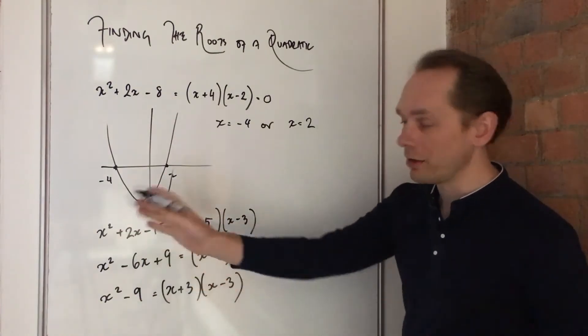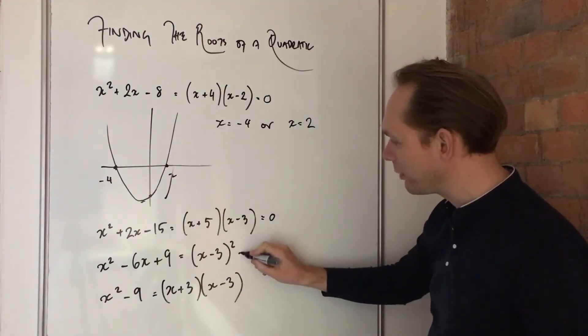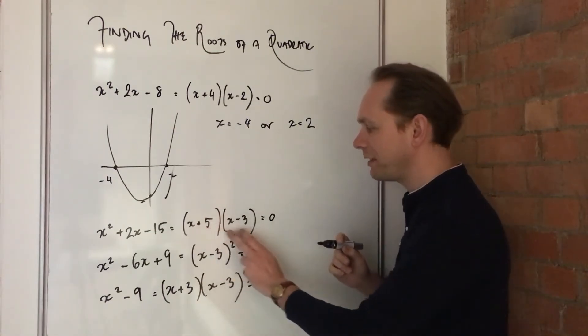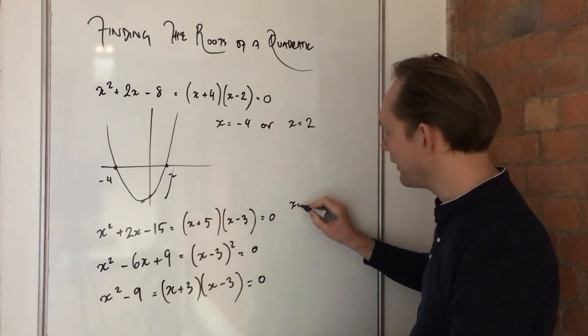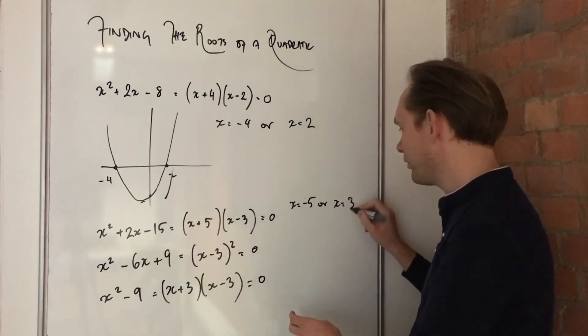Now, let's just see it again in lots of other examples. So we're going to make all these factorised quadratics equal to zero. And then we're just saying, well, if this times this is zero, one of them is zero. So, x is minus 5, or x is 3.